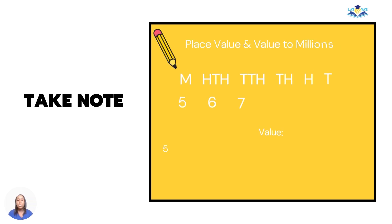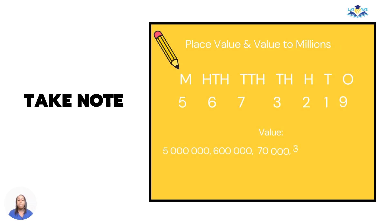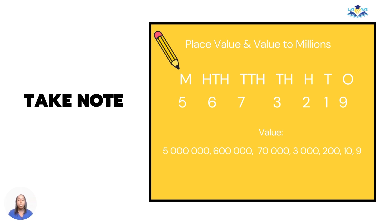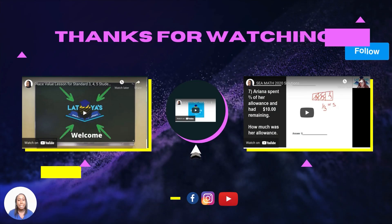If they ask you for the value of the digit, be sure to write the value, and that is the number. For example, five million, or six hundred thousand, or seventy thousand, or three thousand, or two hundred, or ten, or nine.